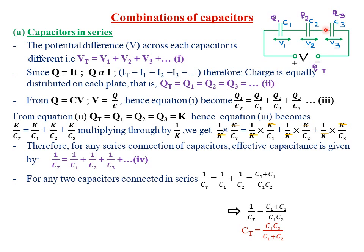Under current electricity 2, we also said that whenever components are connected in series, then to find the total voltage or the EMF, you simply take the sum of the voltage drops across each component. So the potential difference V across each capacitor is different. If you are to find the total voltage through that particular circuit, you simply take V total equals V1 plus V2 plus V3.